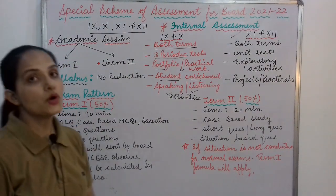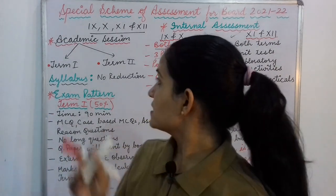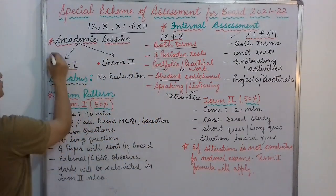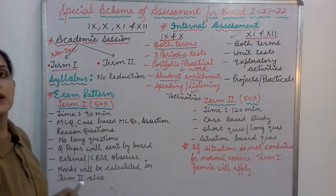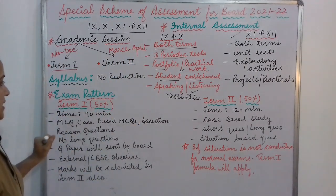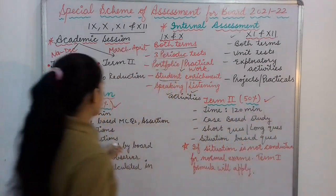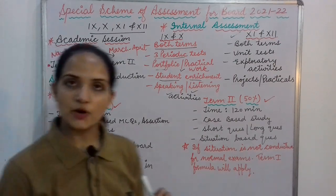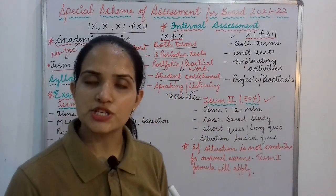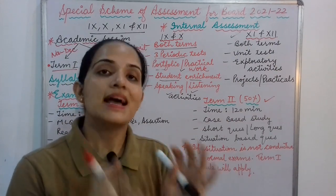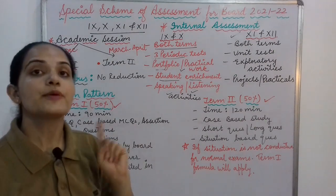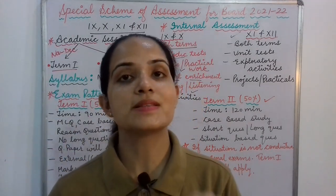Now the most important thing — the exam pattern. The academic session is divided into two terms: Term 1 and Term 2. Term 1 exams will be held in November and December, and Term 2 exams will be in March and April. Term 1 will include 50% of the syllabus and Term 2 will also include 50%. The Term 1 exam will be 90 minutes long and will consist of case-based MCQs and assertion-reason type questions. There will be no long questions. The question paper will be sent by the board.